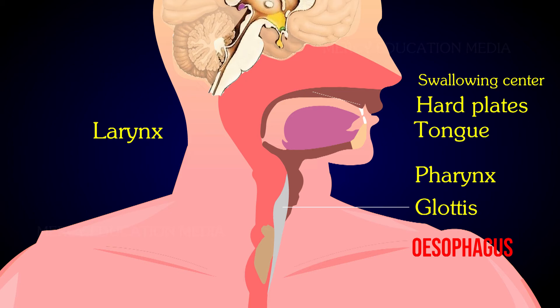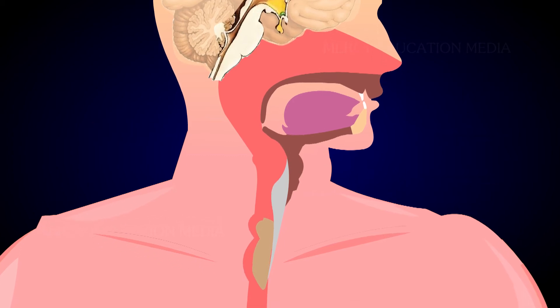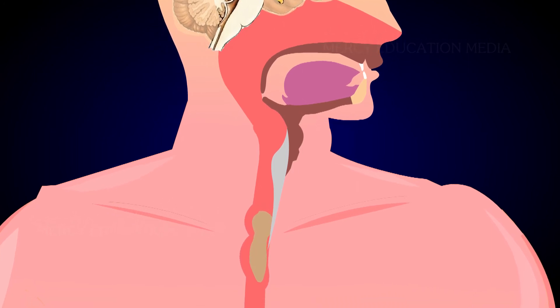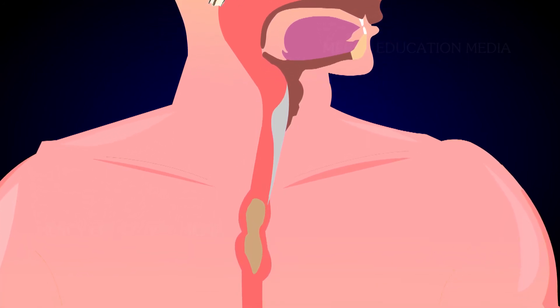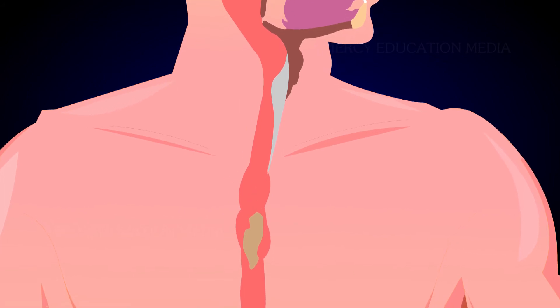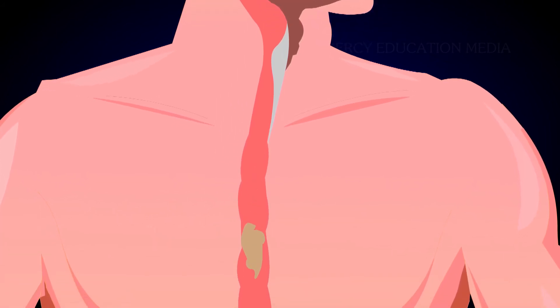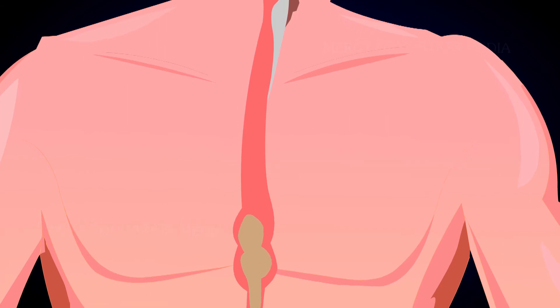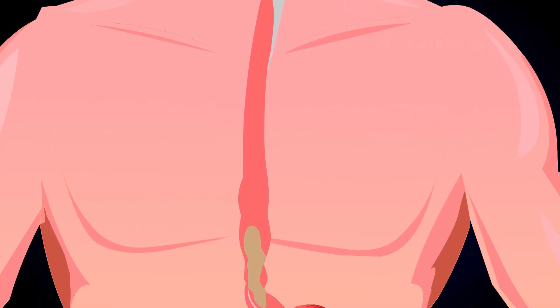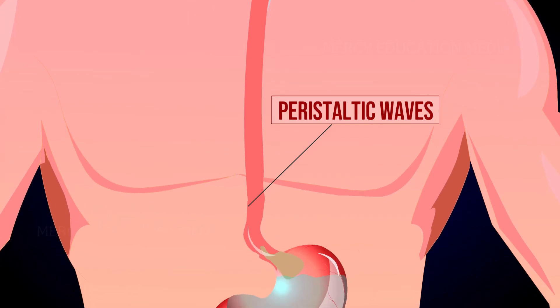The esophageal phase begins with the relaxation of the upper esophageal sphincter. In the esophagus, the food is moved towards the stomach by a progressive wave of muscle contractions that proceed downward towards the stomach. Such waves of contraction in the muscle layer surrounding a tube are known as peristaltic waves.